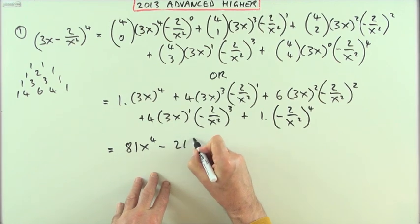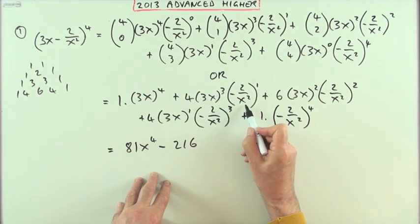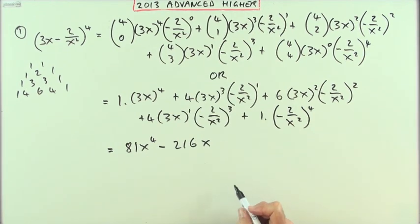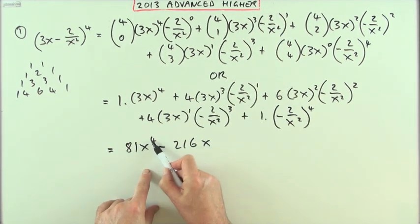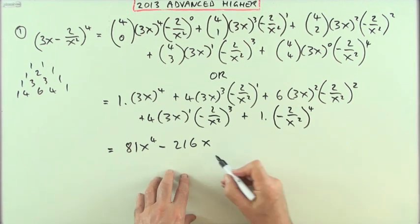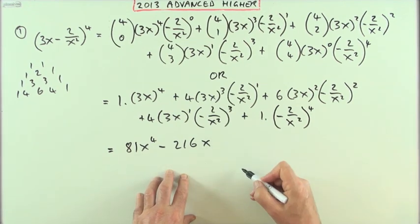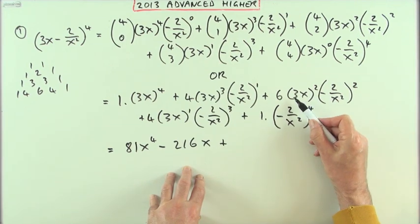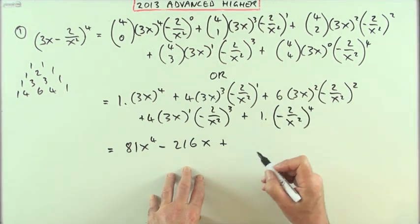And that will set the pattern for the rest of them. The powers of x are dropping three at a time, so next time I'll be looking for x to the negative two, but this will be positive. And here I've got 9 fours are 36 times 6, and 6 cubed that's another 216, only x squared over x to the 4 gives me an x squared underneath.